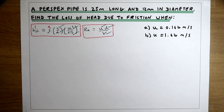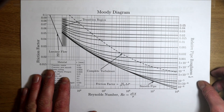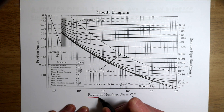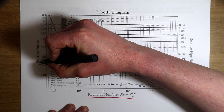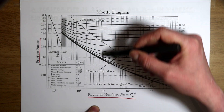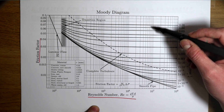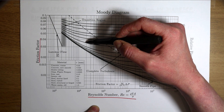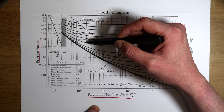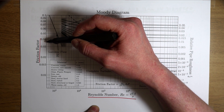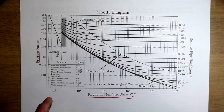The way we're going to find F is using the Moody diagram, which tells us what F is for a given Reynolds number and pipe characteristics. The Reynolds number goes on the x-axis, and we read the friction factor off the y-axis. We draw a line straight up from the Reynolds number until it intersects the black line for our pipe, then draw horizontally across to the y-axis to read off the friction factor.